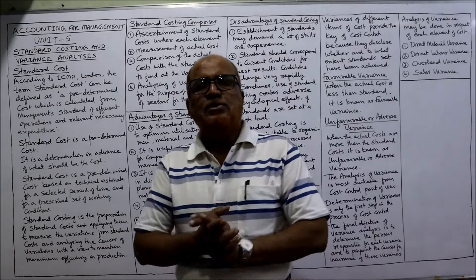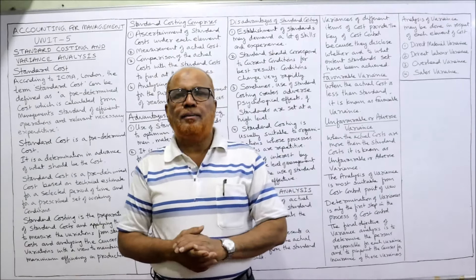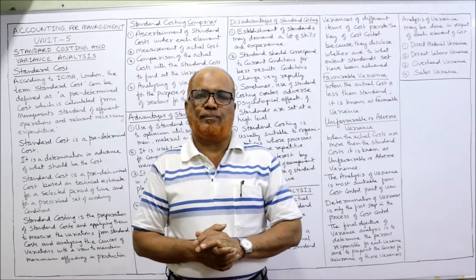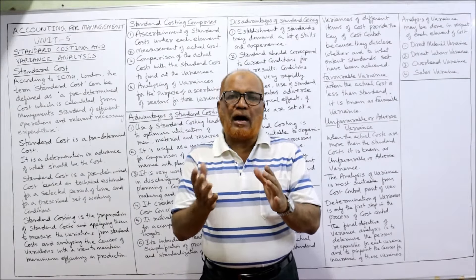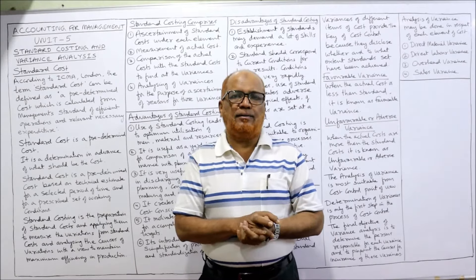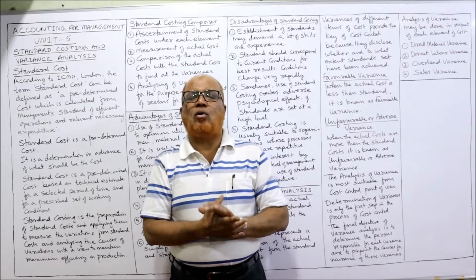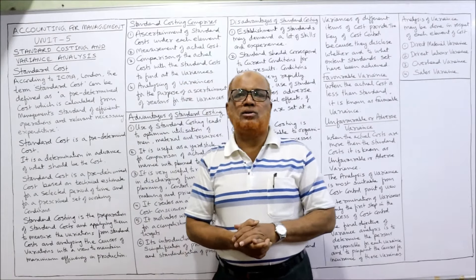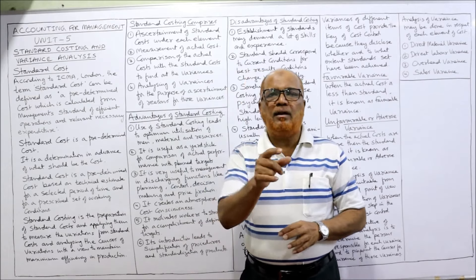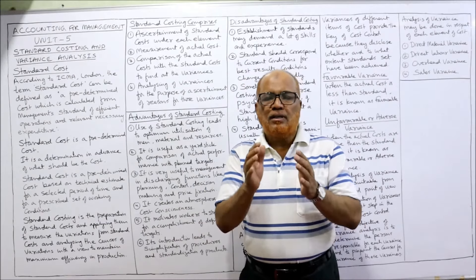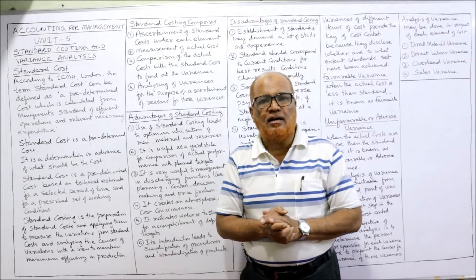There are two types of costing: historical costing and predetermined costing. Historical costing means the cost is recorded after the cost is incurred — first the cost is incurred, then it is recorded. The second type is predetermined costing, where the costing takes place before the cost is incurred.